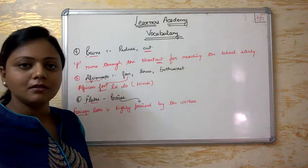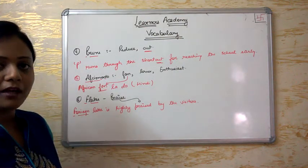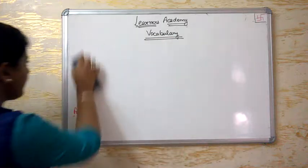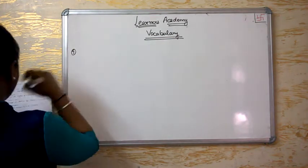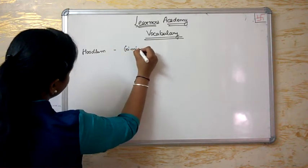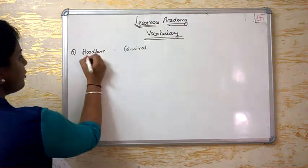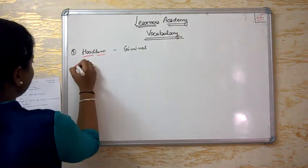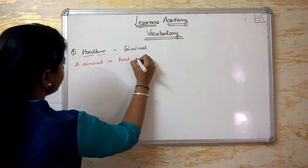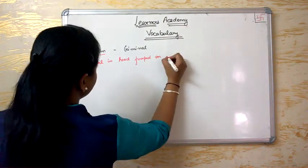In this video we'll cover 10 word meanings. I hope you remember them after watching this — please repeat things in your mind, it will definitely help you to learn the words. Now we'll take up our seventh word meaning, which is Hoodlum. Hoodlum means criminal. To remember it: 'A criminal in a hood jumped on others.' So Hoodlum equals criminal.